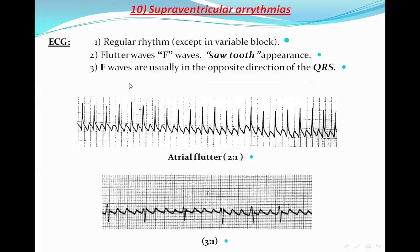Atrial flutter will be regular in rhythm if the block is fixed, but may be variable — for example, showing 2:1 in one area and 3:1 in another. On the ECG, we will see flutter waves or F waves with a classic sawtooth appearance, usually in the opposite direction to the QRS complex. If the QRS is positive, the flutter waves will be negative. Here the QRS is negative, so these deflections are the flutter waves — visible in a 3:1 ratio.